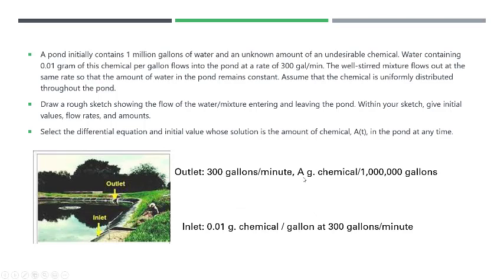And then for our outlet, it's flowing out at the same rate. And because the amount of water remains the same in the pond, and because A is—I'm going to let A represent the amount of chemical in the pond at any time—then we'll have A grams of chemical per 1 million gallons flowing out.